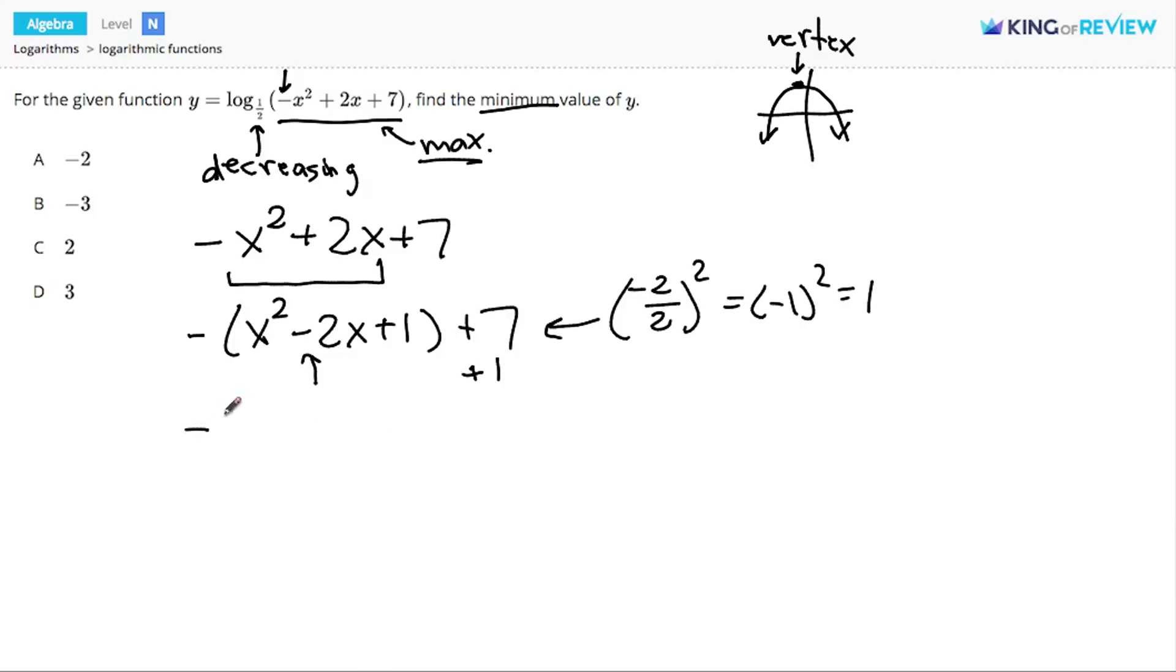I now have negative parentheses x squared minus 2x plus 1 plus 7 plus 1 is plus 8. But the goal of completing the square is to make a perfect square. And I have x squared minus 2x plus 1 factors into x minus 1 squared. And this is called vertex form.